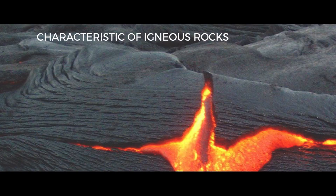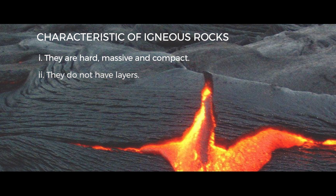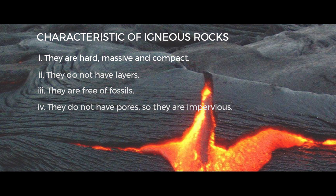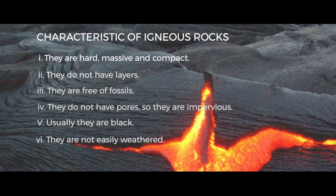Now let us understand the characteristics of igneous rocks. Igneous rocks are very hard, massive, and very compact. They do not have layers, which means you don't see layers on igneous rocks — that's why they are free from fossils. They do not have pores, so they are impervious in nature, meaning water cannot pass through igneous rocks. The color of igneous rocks is black, which is one physical identity. They cannot be easily weathered because they are very compact and very hard. And they are very rich in minerals — they contain lots of minerals.